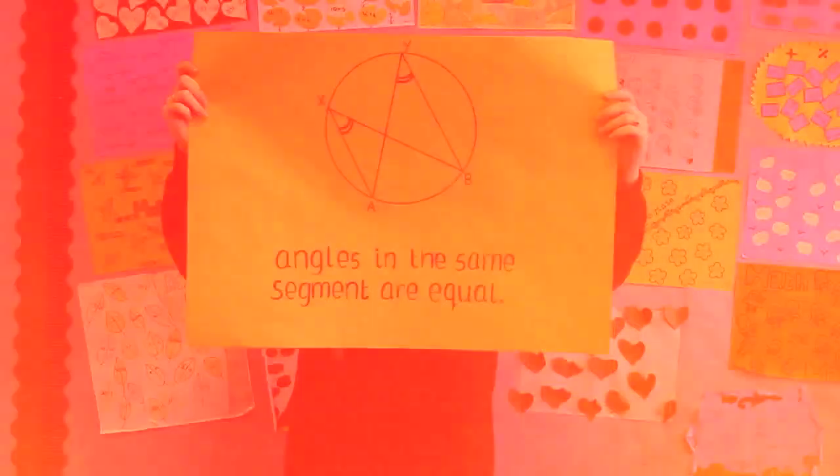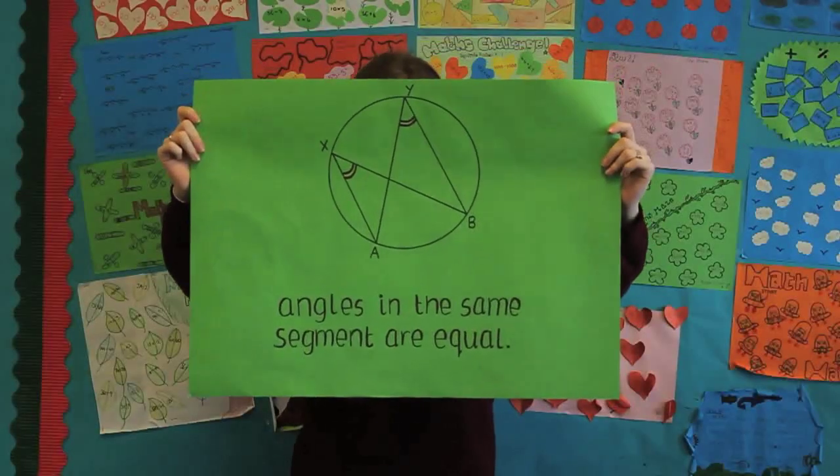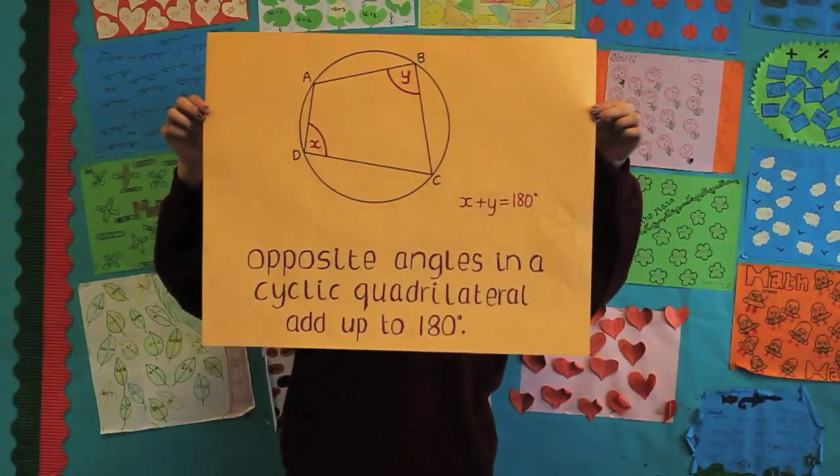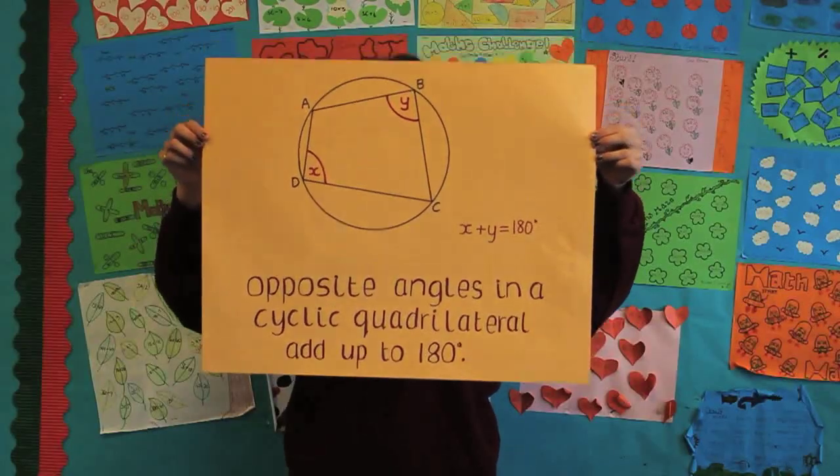Angles in the same segment are equal, and this is number five. The opposite angles of a cyclic quadrilateral add up to one hundred eighty degrees.